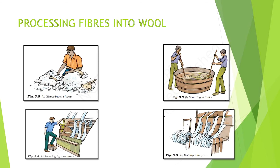In this slide, all the processes of fiber into wool are shown with pictures. The first picture shows shearing of a sheep. The second shows scouring in tanks — washing the skin with hair to remove grease, dust, and dirt. The third image shows scouring by machines, as today scouring is done by machines rather than by hand. The last picture shows the rolling into yarn after all the processes are completed.